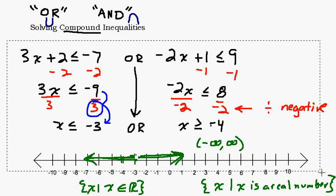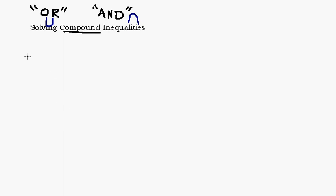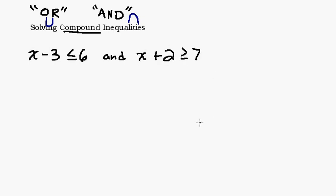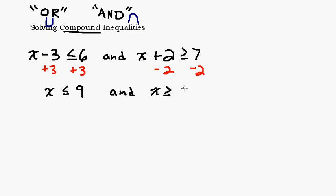Let's try an 'and' problem: x minus 3 is less than or equal to 6, and x plus 2 is greater than or equal to 7. These are one-step inequalities. For the first, add 3 to both sides; for the second, subtract 2. We end up with x is less than or equal to 9 and x is greater than or equal to 5.